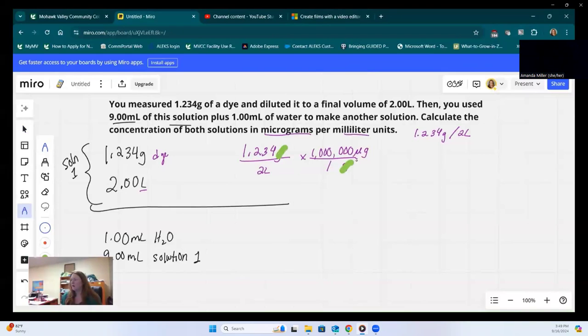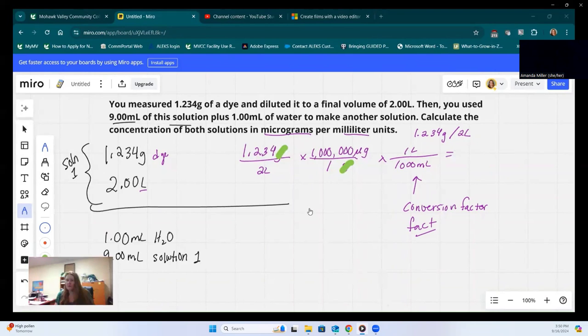Now the two liters is still there. What I want to do is get rid of liters and turn it into milliliters. I know that there's one liter, and I chose to put the liter on top because that is opposite of the starting information that I have. So two liters will cancel with one liter, and I know that there is a thousand milliliters. This is called a conversion factor. It's a true fact that relates to the two units I'm trying to think about. So altogether, if I do this math, it's multiplying by a thousand and dividing by two.